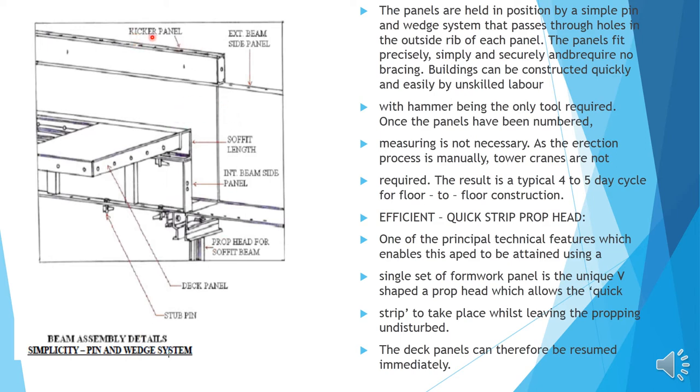Beam assembly details: This is the method of another beam assembly detail. The kicker panels will come out at the top, exit beam side, this is a soffit length, internal beam side panel. This has been erected and from here you are having a slab panel.